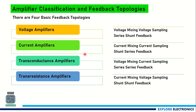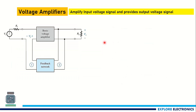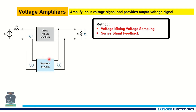We need to understand how we are going to get a voltage amplifier when we connect feedback in this manner. Let us look at the voltage amplifier first. If it is a voltage amplifier, it is going to amplify the input voltage signal, and at the output we expect the amplified version of the voltage signal itself. That's why we call it a voltage amplifier. Here you need to observe why it is called voltage mixing, voltage sampling, and series-shunt feedback.